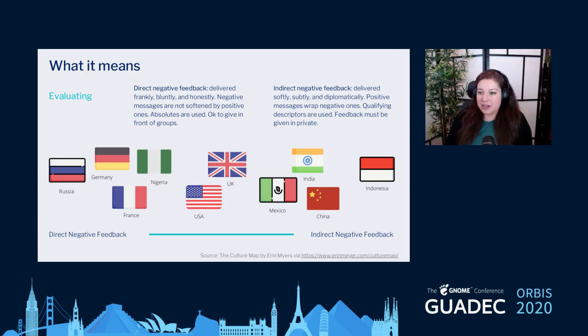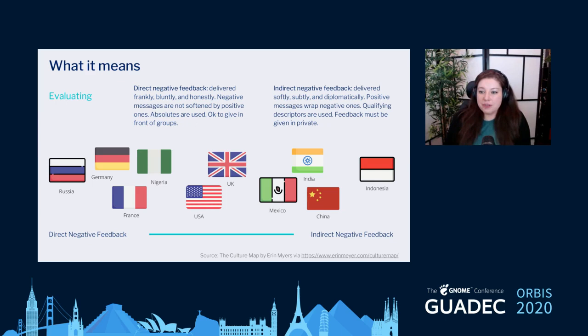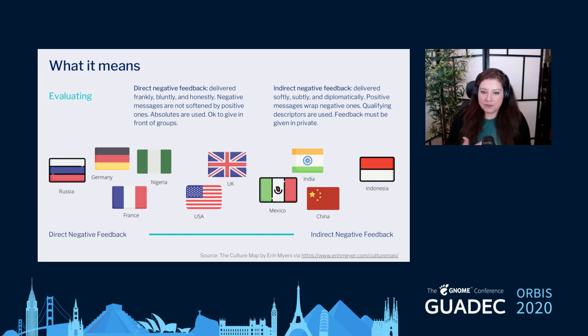For indirect negative feedback cultures, feedback is delivered very softly, subtly, and diplomatically. It's really important to have positive messages along with the negative ones — you've probably heard of the sandwich effect: positive, negative feedback, positive. Feedback is given in private. Russia and Israel were called out in the book as being among the highest in the direct negative feedback area.